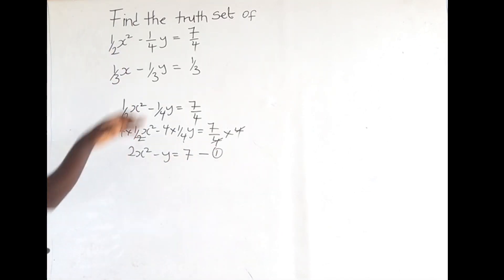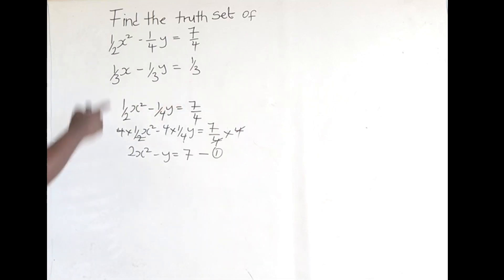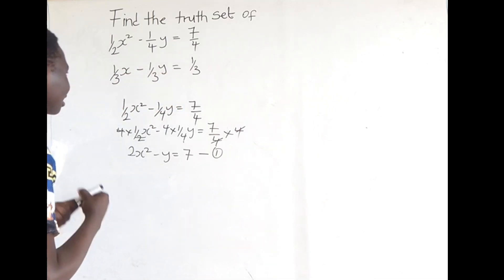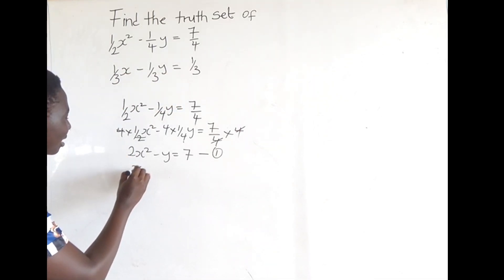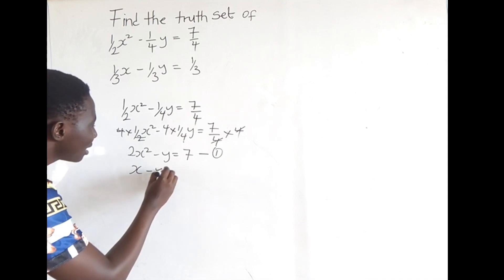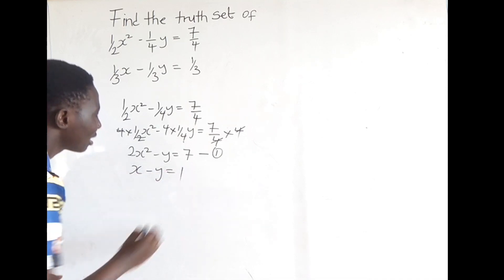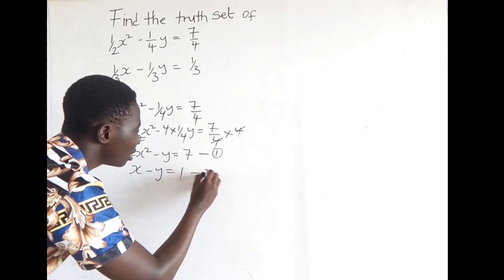For the second equation, we find the LCM, which is 3. So when we multiply through by 3, we are going to get x minus y is equal to 1. So this becomes equation 2.